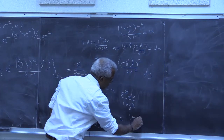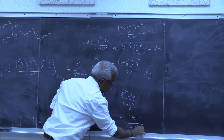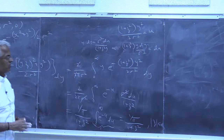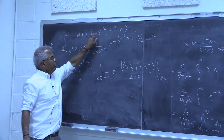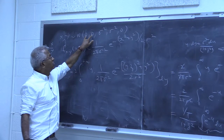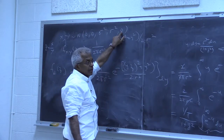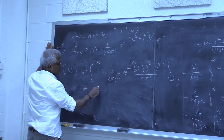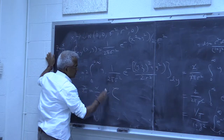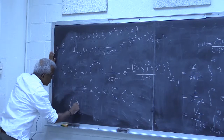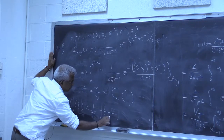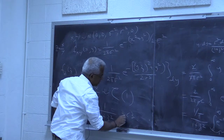So the answer is 1 over pi(1 plus z squared), for z from minus infinity to plus infinity. This is the density function of a standard Cauchy random variable. So if x and y are zero-mean, independent, with identical variance, then z equals x over y is Cauchy with parameter 1.